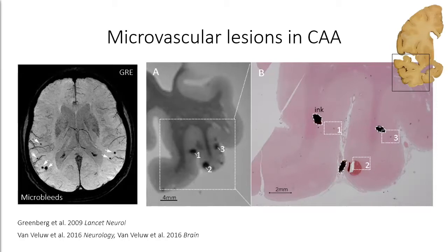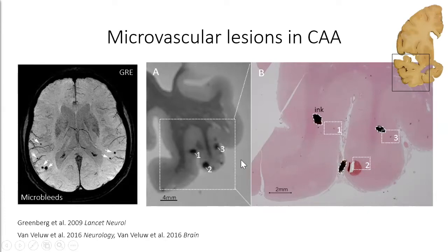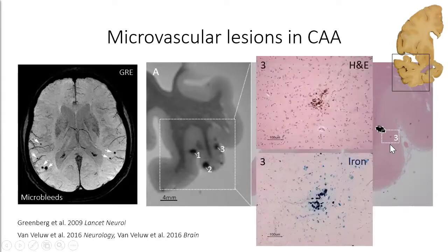A few years ago we did a series of studies looking at the pathology underlying these lesions to validate that they are in fact bleeds. We used ex vivo MRI, scanning brain slabs of patients with a diagnosis of severe CAA at high-field seven Tesla. We identified microbleeds in the cortex and then did sectioning to find those same areas under the microscope. On H&E staining, we found that the majority of these lesions consist of focal hemosiderin-laden macrophages, which is very indicative of old microhemorrhages — confirming that these MRI signatures are in fact old microhemorrhages in the brain.